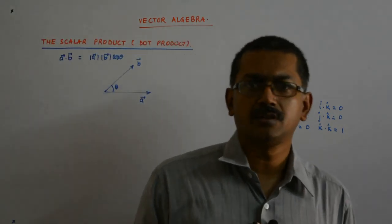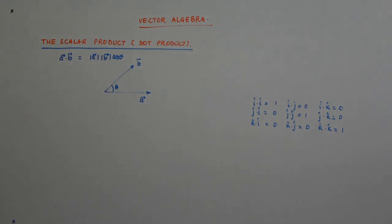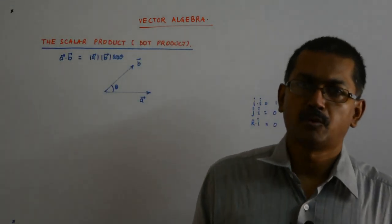So we make it co-initial and then find the smaller angle between the two vectors. That's how we had defined a dot b as equal to mod a mod b cos theta.